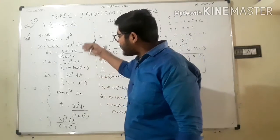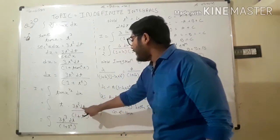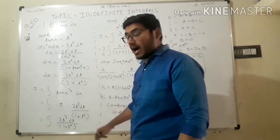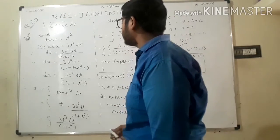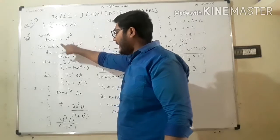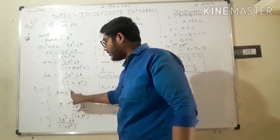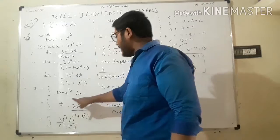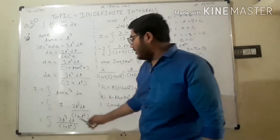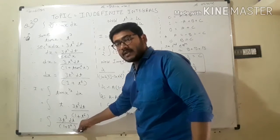The value becomes t times 3t² dt upon 1 plus t⁶. Since tan(x) = t³, raising it to the power 1/3 gives t. Substituting the dx value, the integral becomes 3t³ dt upon 1 plus t⁶, which simplifies to 3t² dt upon 1 plus t⁶.